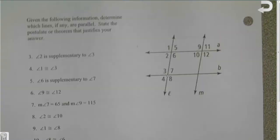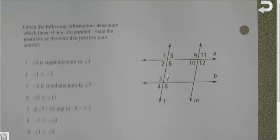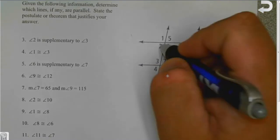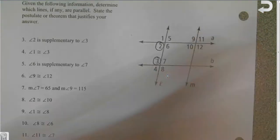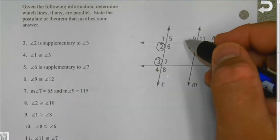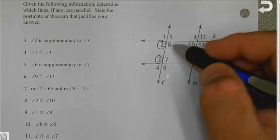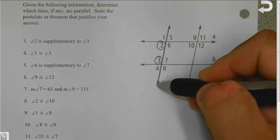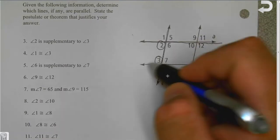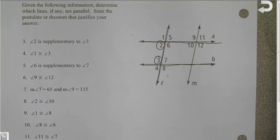All right. I give you a set of lines. You're going to tell me if they're parallel and then you have to give me a reason. So let's look at example three. And it gives me 2 and 3. And it says that 2 is supplementary to 3. Perfect. So then what two lines are parallel because of 2 and 3? 2 touches A and L. 3 touches L and B. So what two lines are parallel?